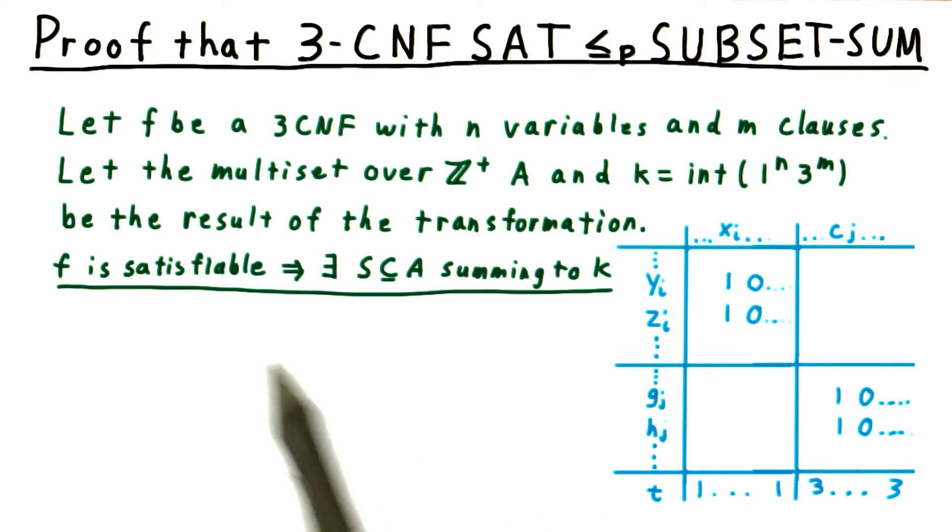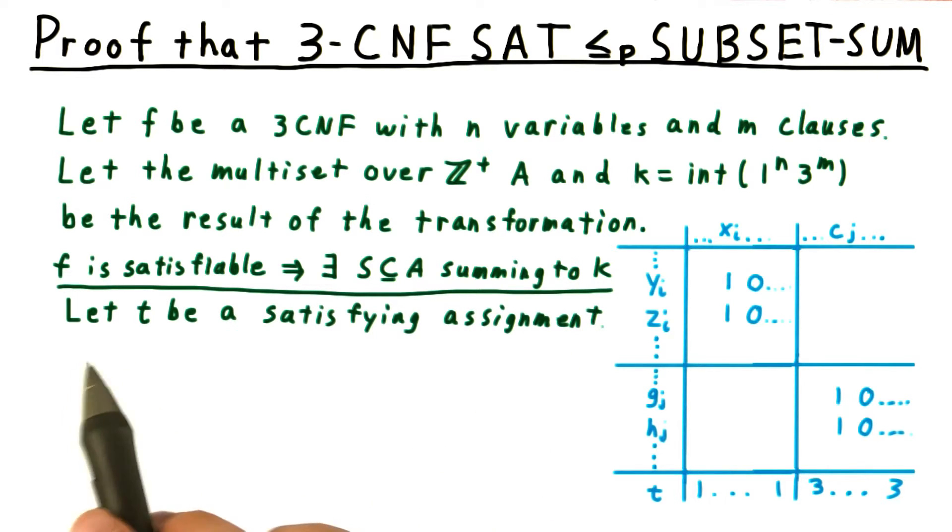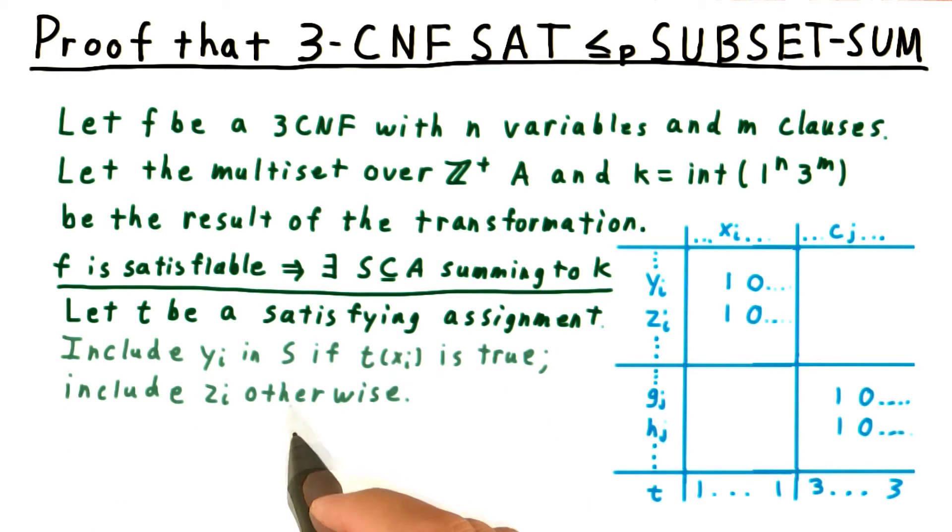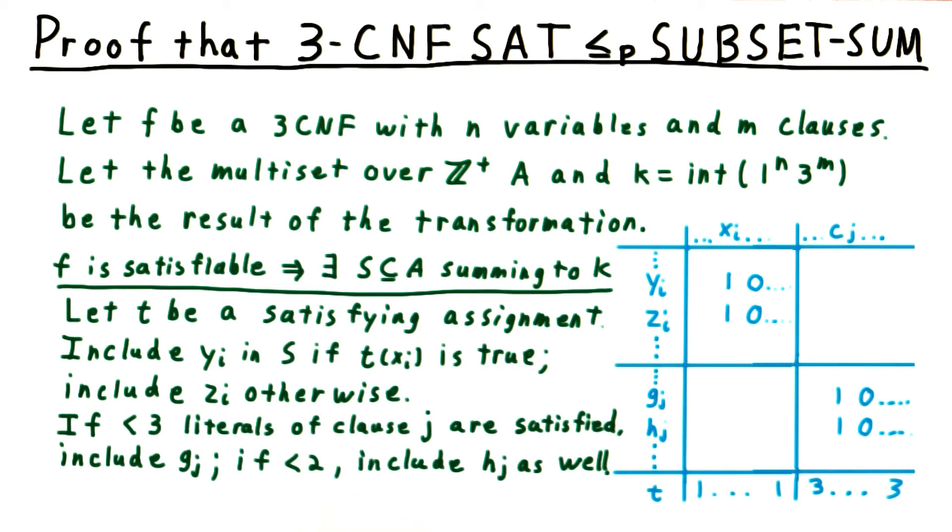First, we show that if f is satisfiable, then there's a subset of A summing to k. We'll let t be the satisfying assignment. Then, we include yi in our set S if xi is true under the truth assignment, and we include zi otherwise.